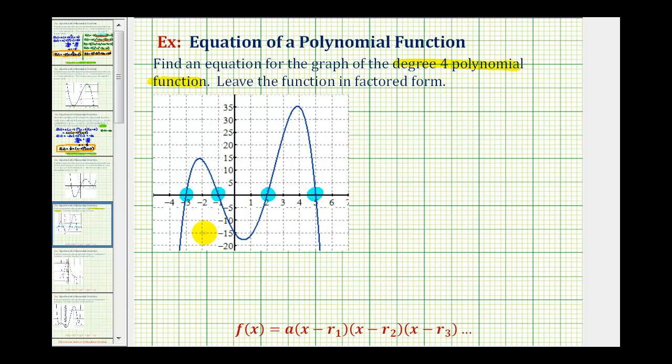Because we know the roots or zeros of our function, we can write the polynomial function in factored form using this form here, where a is a constant, and r sub one, r sub two, r sub three, and so on are the roots or zeros of the function. But we're also going to have to find one more point on the function to determine the value of a.